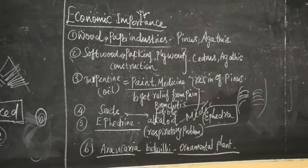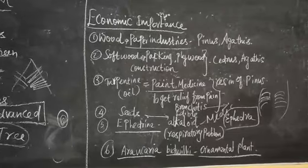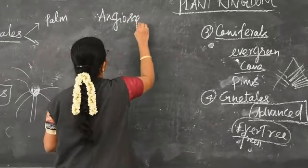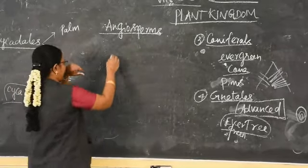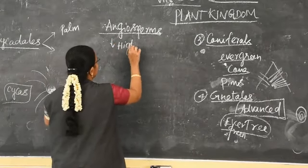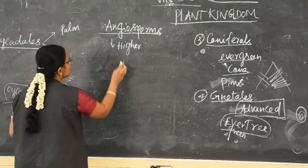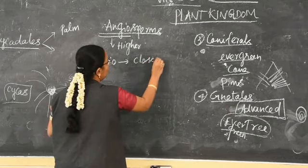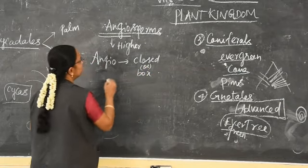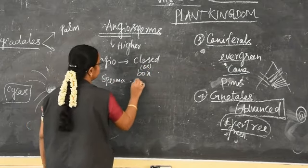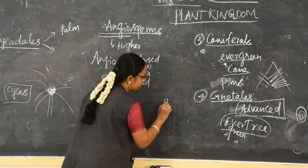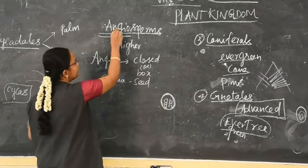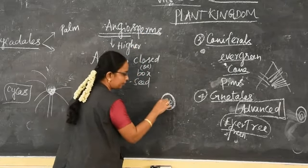Next we move on to Angiosperms. These Angiosperms are considered to be higher plants because in them the vascular tissue is present. Angio means closed or boxed, and sperm means seed. So the seeds are closed — the ovule is enclosed by a cover called the ovary. They are considered to be Angiosperms — closed or boxed — and the seeds are within the box.